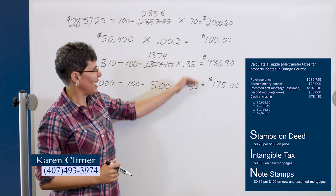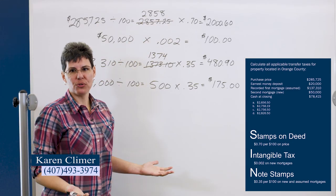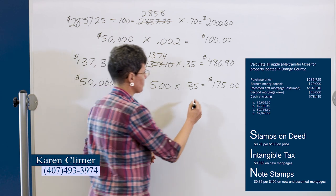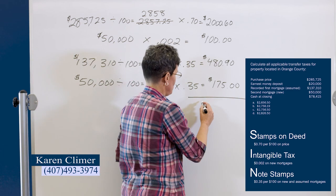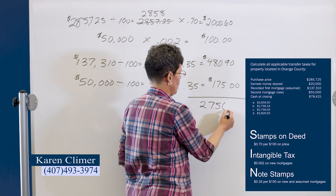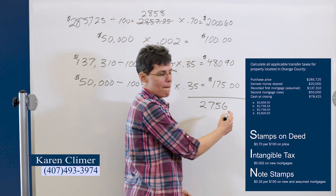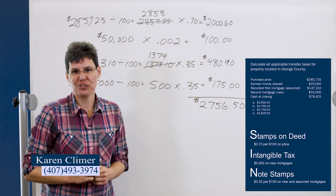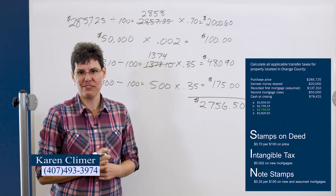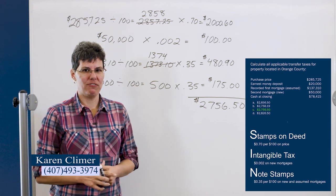So we've got all these different taxes. And the question is, what are the total taxes? So we're just going to add these numbers up. And we get $2756.50. So the answer in this case is C, $2756.50.